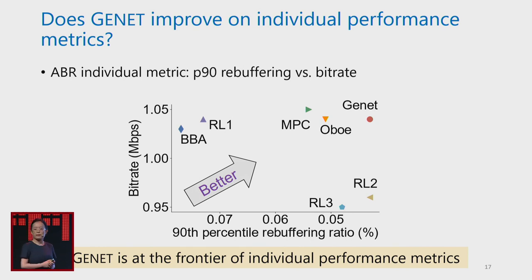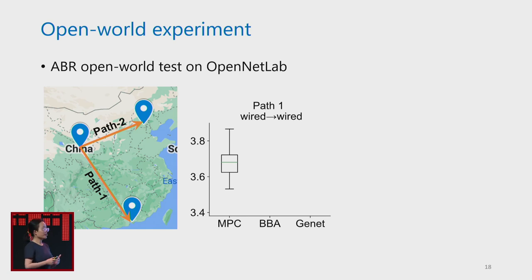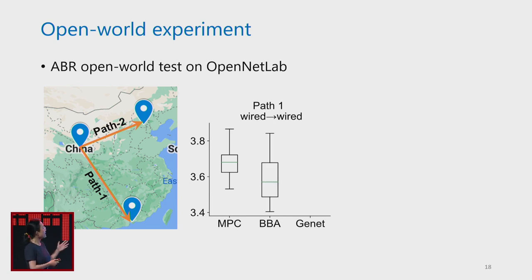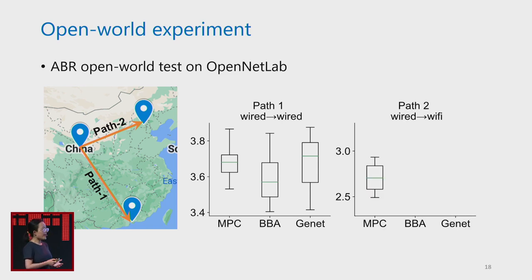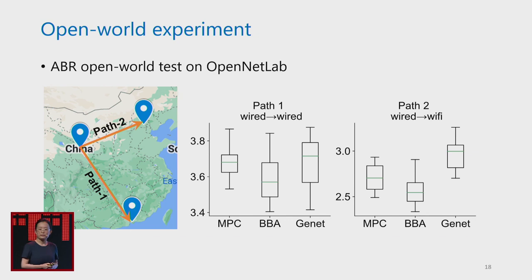Finally, we test in the hardest environment: a wild open-world test using Microsoft OpenNet Lab. For the ABR application we have five paths in the paper, but here we show two. For path one, a wired-to-wired connection, Genet performs similarly to the baselines — reasonable because wired-to-wired has high average throughput. For path two, a wired-to-Wi-Fi connection, Genet performs much better than the baselines. This shows that Genet trained in simulated environments can also perform well in an open-world testbed.